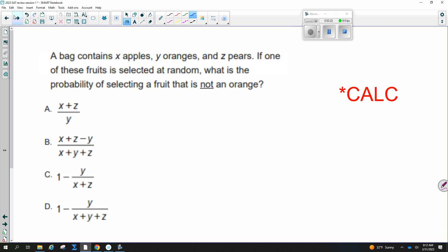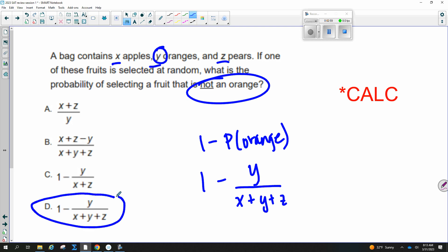A bag contains X apples, Y oranges, and Z pears. If one of these fruits is selected at random, what is the probability of selecting a fruit that is not an orange? So if we're not doing an orange, we can do 1 minus the probability of an orange. That would give me not an orange. So 1 minus the probability of getting an orange. So there are Y oranges, and we always do our probability out of the total here. So X plus Y plus Z. So my answer is D.